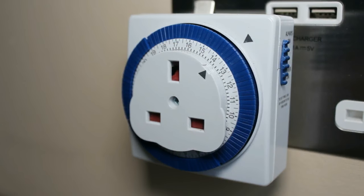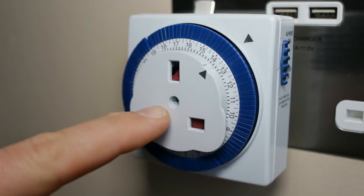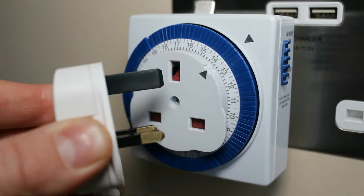There's not a lot to these timer switches. You've got a few main elements. Obviously you've got the plug on the back that plugs into your wall socket, and the plug socket on the front here which your appliance will plug into.